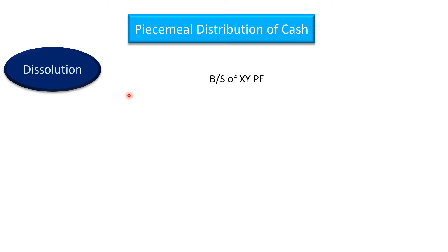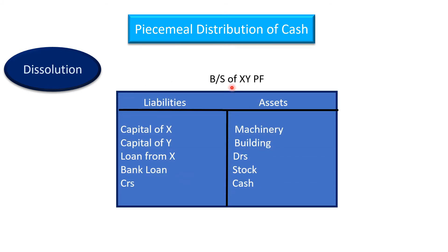Let us take an example. Suppose this is the balance sheet of a partnership firm — say firm XY. The firm has decided to dissolve, meaning it has decided to close down the business. Now, how will it close down? Just one fine morning it cannot simply decide to shut down. When a firm has to dissolve, it has to undergo a lot of procedure. Looking at the balance sheet, we see liabilities on one side.